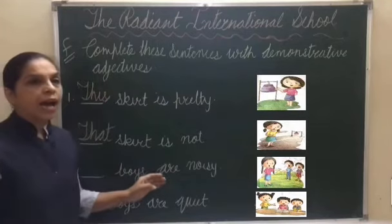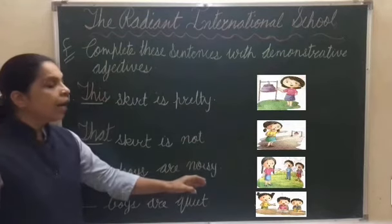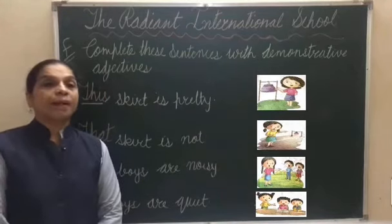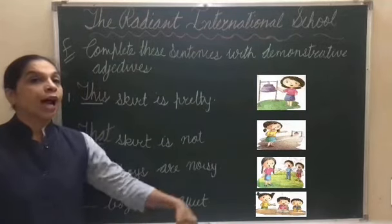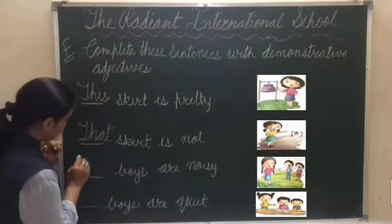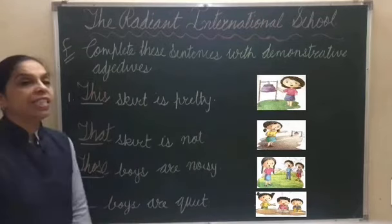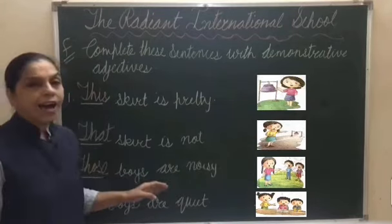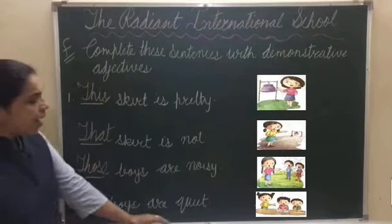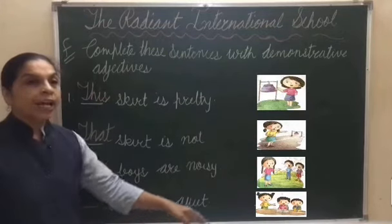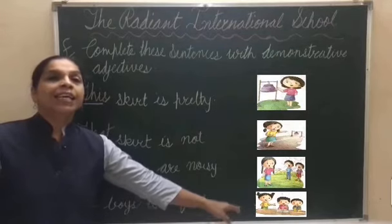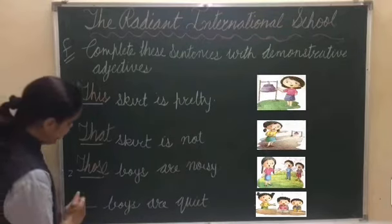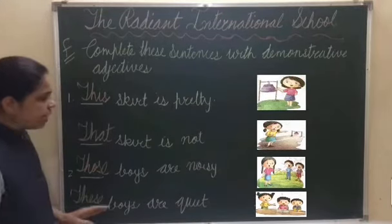Number 3 (continued): Blank boys are noisy. The girl is pointing at the boys, who are a little far from her. Since the boys are far and there are many of them, we use 'those': 'Those boys are noisy.' Number 4: Blank boys are quiet. Here the girl is showing that these boys are quiet, and the boys are near to her, so we use: 'These boys are quiet.'